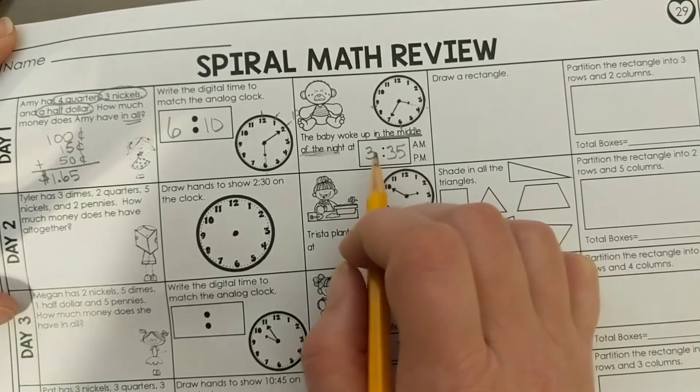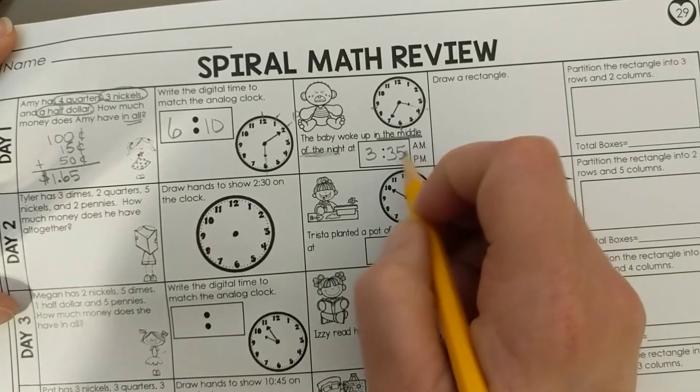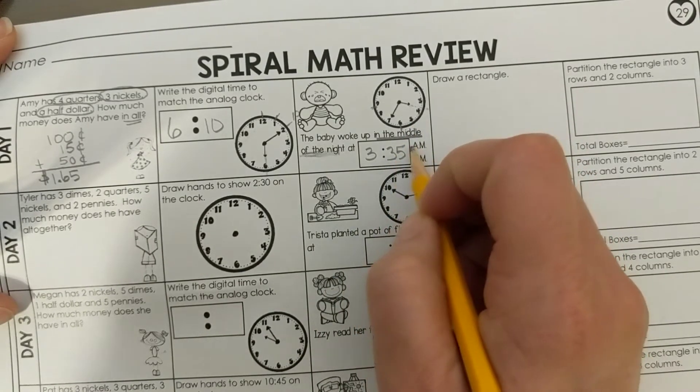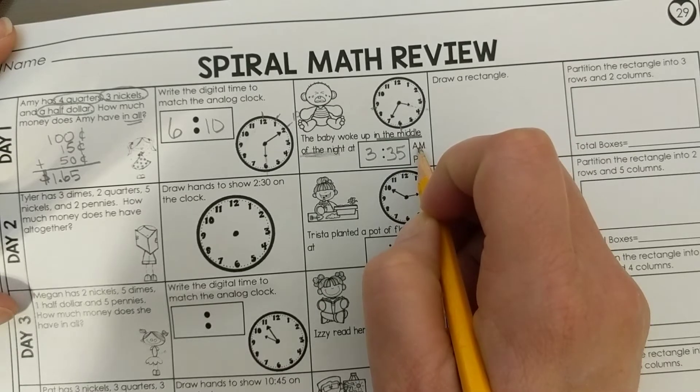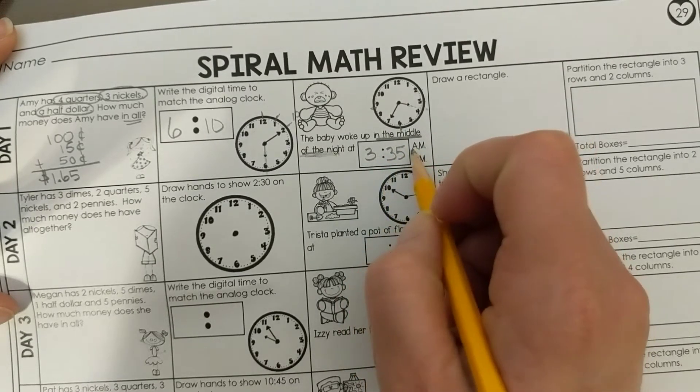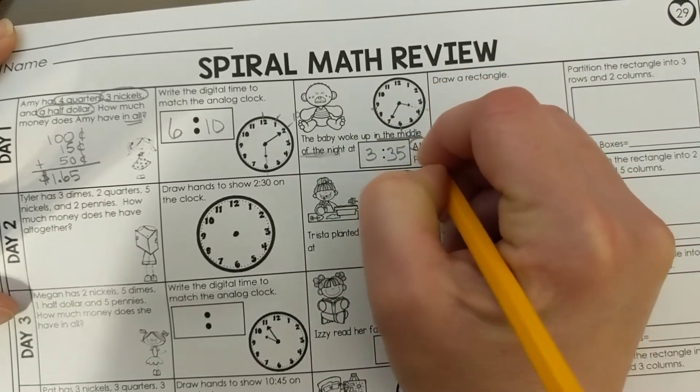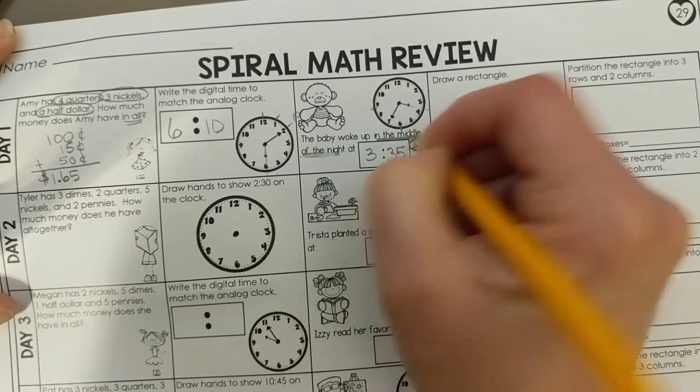Most of you now, 3:35 AM, most of you are still asleep here. You usually don't get up till about 7 in the morning, 6 or 7 in the morning. So this is before you wake up. In the middle of the night means when you're normally asleep. We're going to circle AM.